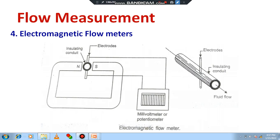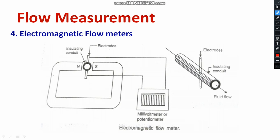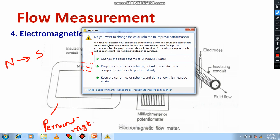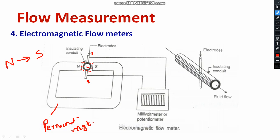The schematic diagram is shown here. As you can see, there is a permanent magnet which produces a magnetic field from North Pole to South Pole — electromagnetic lines of force pass from North Pole to South Pole. In between the poles, you keep a conduit where the fluid flow takes place. At the ends of the conduit, two electrodes (electrode 1 and electrode 2) are placed.